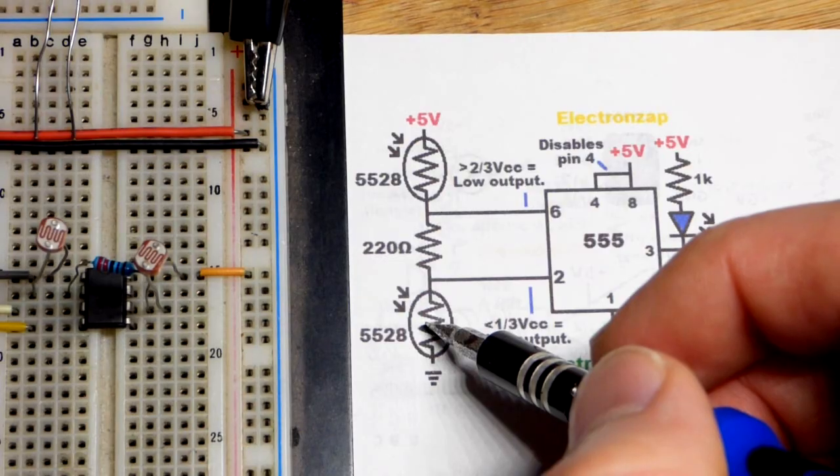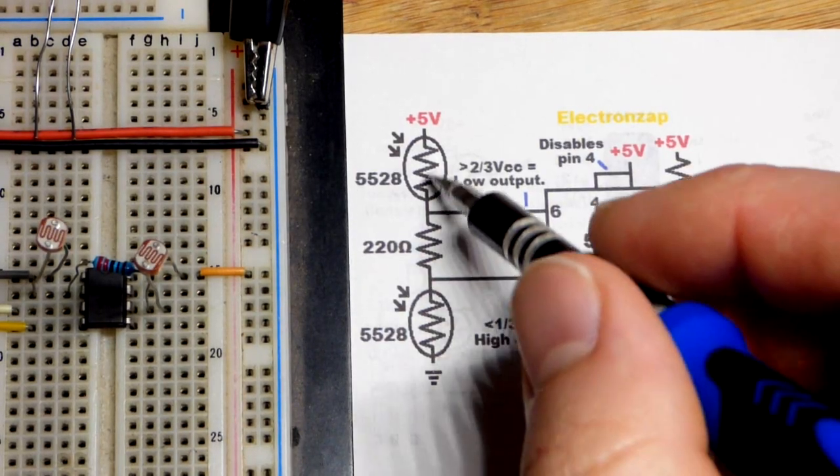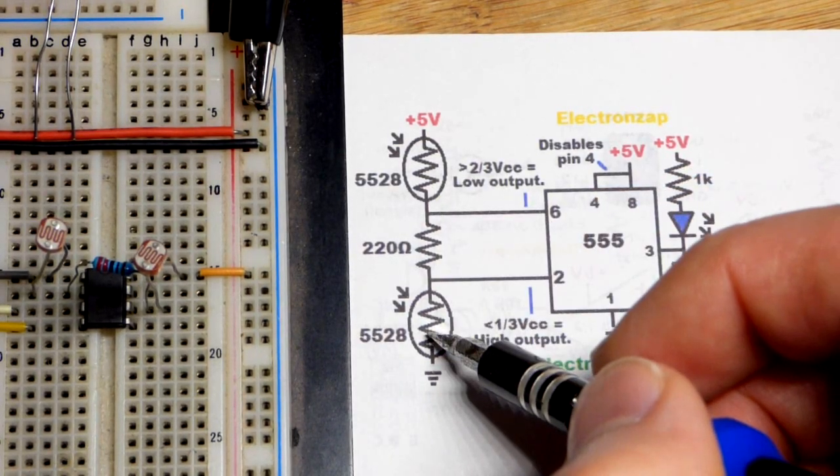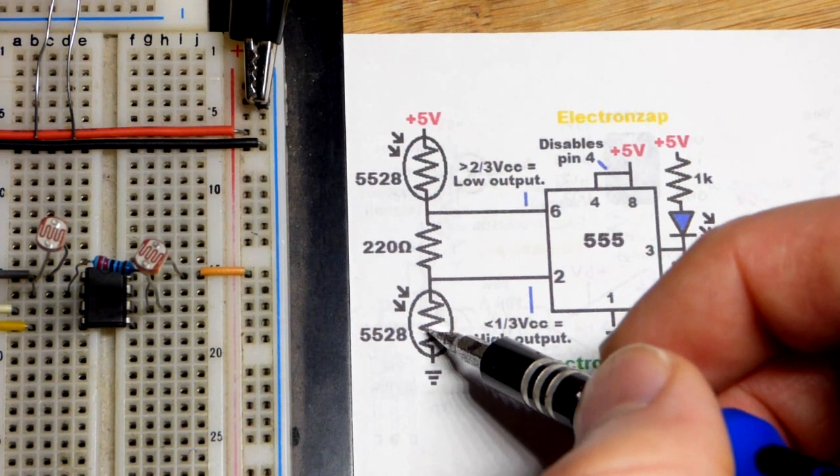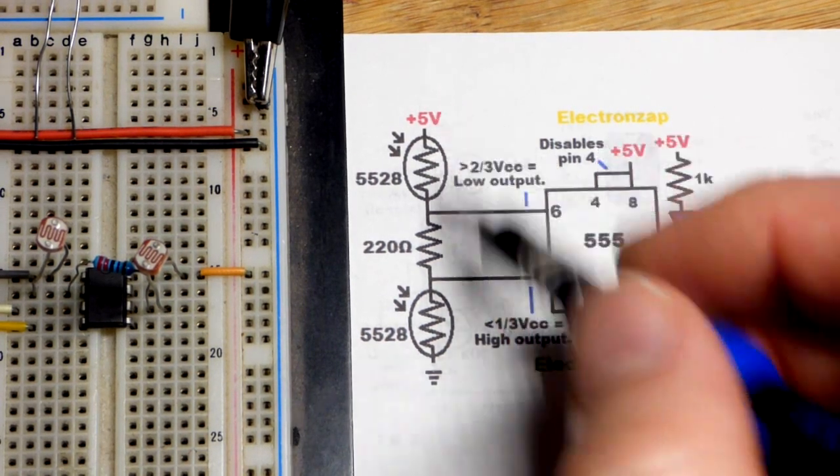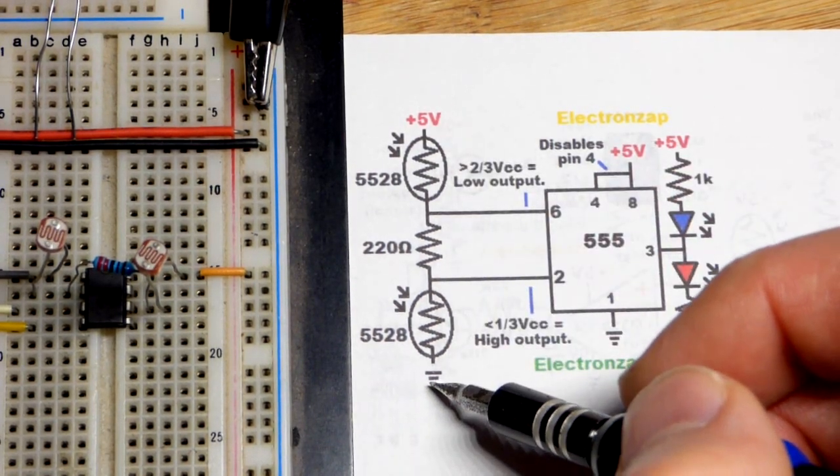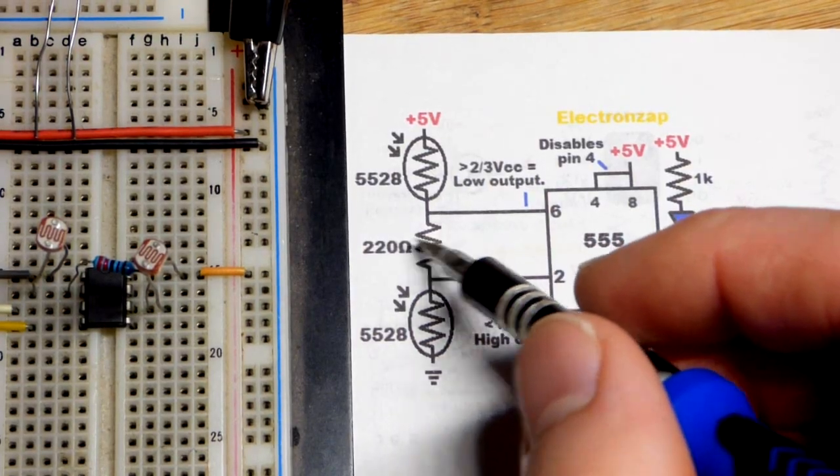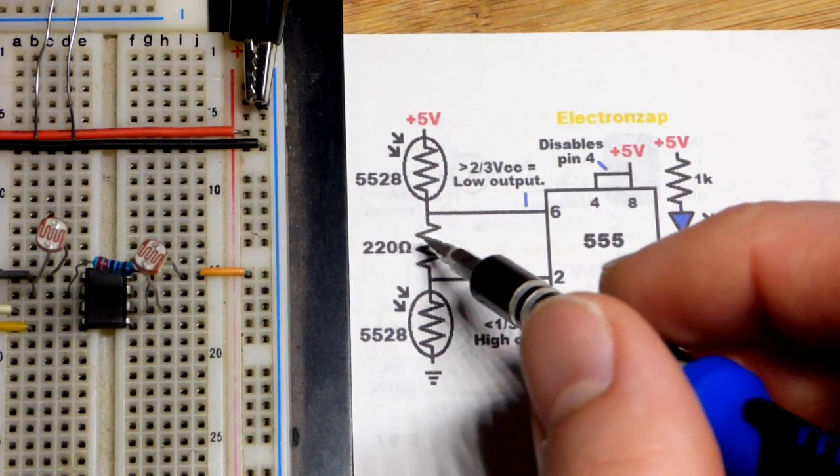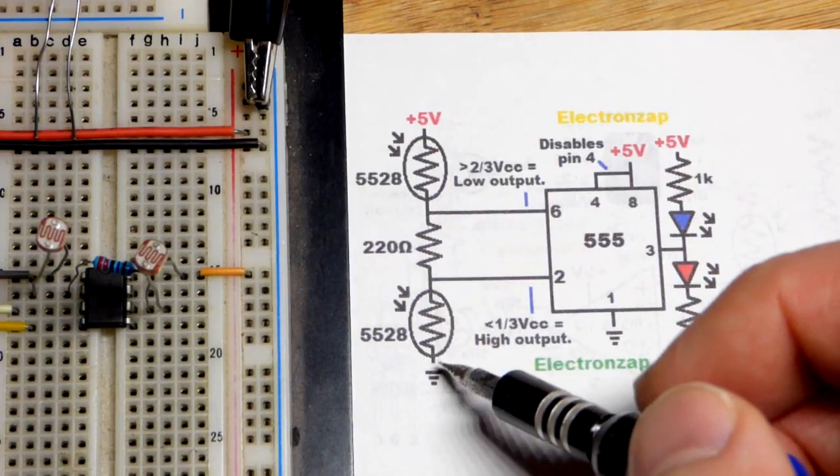But in any case we'll have a lot more current flowing through them than what we desire. So we put this 220 in series. That's about the minimum I use with five volts, especially when there's other components kind of taking some of the heat off of it.